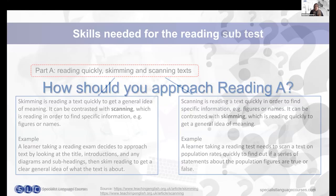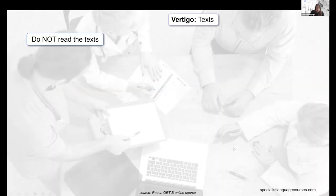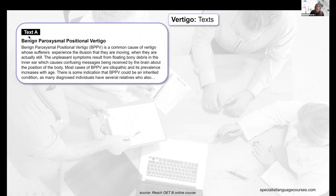So how should you approach Reading A? You have 15 minutes, and skimming and scanning is very important. Having a clear set of steps and strategies will help with time management. First of all, do not read the text first — meaning do not read from beginning to end in detail; you do not have time. You should look at the headings instead. Most texts will have headings; if they don't, look at the format or layout of the text. For example, looking at Text A's heading, we can assume it contains more information about BPPV.